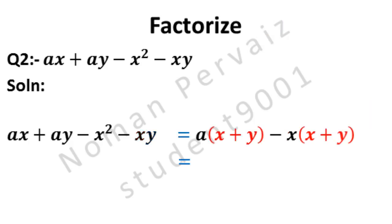Now, here X plus Y is common from both terms, as highlighted in red color. X plus Y is taken as common. Since X plus Y is common, A minus X is written within the bracket. Hence this is our answer.